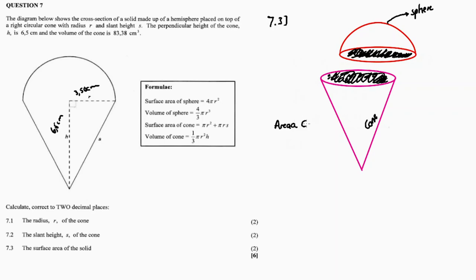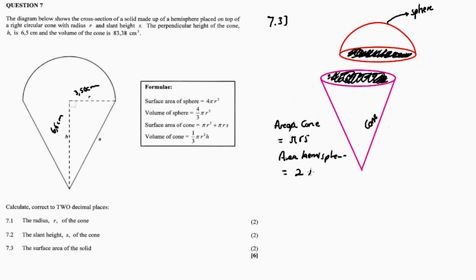The surface area of the exposed cone side is πrs (not including the base πr²). The surface area of the hemisphere is the full sphere formula 4πr² divided by 2, which gives 2πr². So the total surface area = πrs + 2πr².